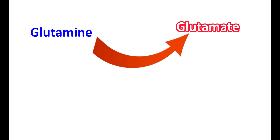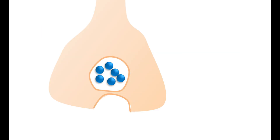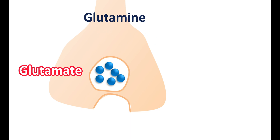Another source for glutamate is from the amino acid glutamine. Glutamine can be converted into glutamate by the enzyme glutaminase, and this conversion is particularly important within glutamatergic neurons. Just like many neurotransmitters, glutamate is stored in synaptic vesicles by a special transporter. Glutamine acts as an important precursor; it is converted to glutamate by glutaminase, stored in vesicles, and released by calcium-mediated exocytosis when an action potential arrives.